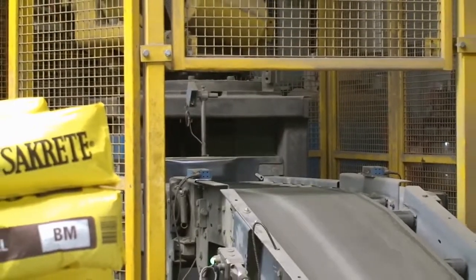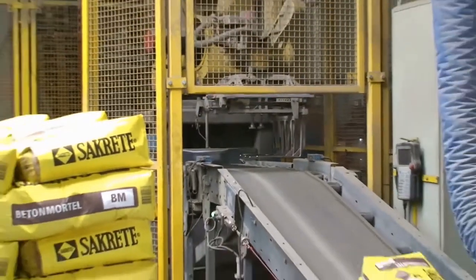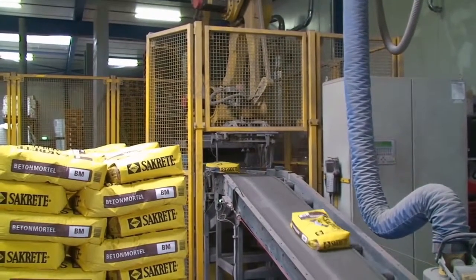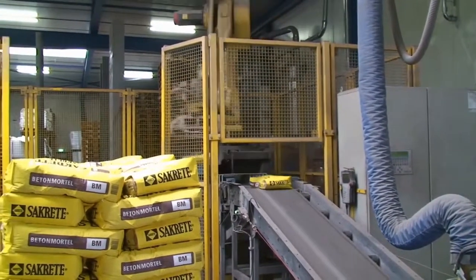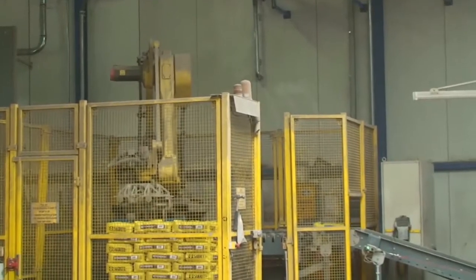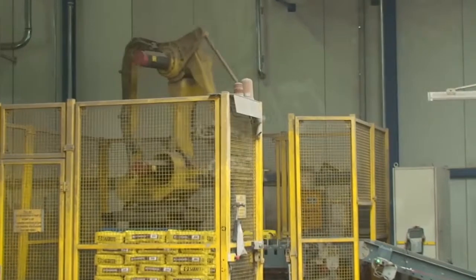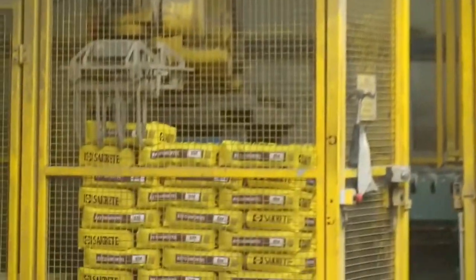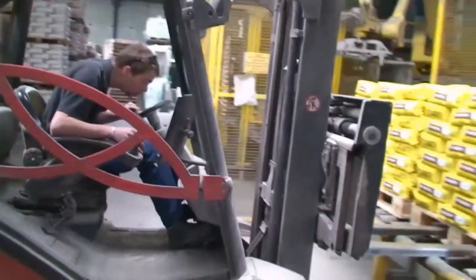A robot with fork wrap takes bag after bag and turns the bags in the correct position. The full pallets are stored outside, depending on weather conditions.